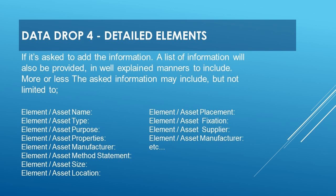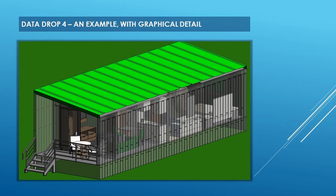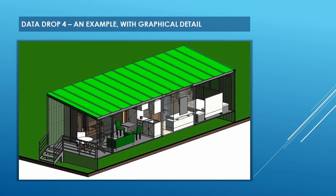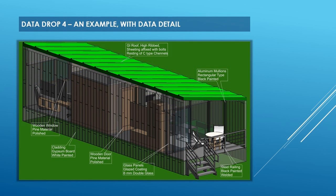If asked to add the information, a list of information will also be provided in well-explained manners to include. More or less, the asked information may include but is not limited to: element or asset name, type, purpose, properties, manufacturer, method statement, location, placement, fixation, supplier, and size, etc. Data Drop 4 — an example with graphical detail, and an example with data detail.